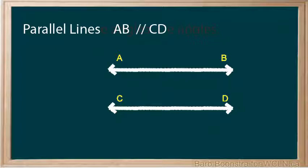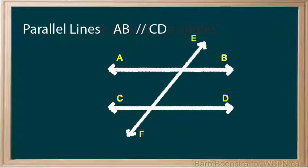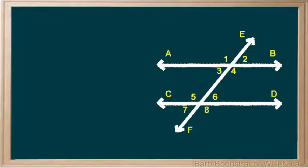If there are two parallel lines and a third line crosses them, the crossing line is called a transversal. A transversal creates eight angles, and pairs of these angles have special names.